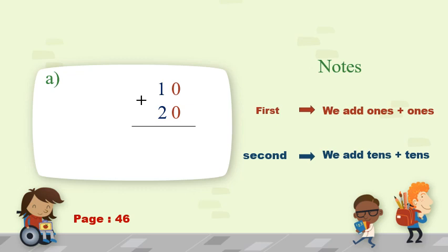Let's start and answer our examples together. Number one: 10 plus 20. I say to myself: ones plus ones, tens plus tens. Zero plus zero equals zero, so I write zero. Then one plus two — two on my mind, one on my hand — after two: three. So the total answer will be thirty.